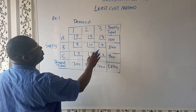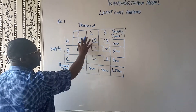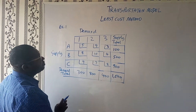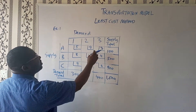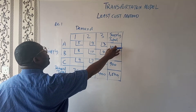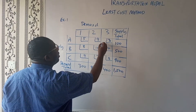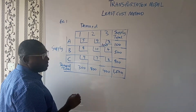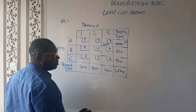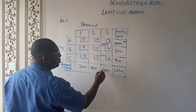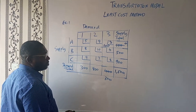From the unit costs, which is the least cost here? We have 3 — 3 is the least cost. Since 3 is the least cost, we're going to portion the supply from A into center 3. So we're going to have 100 here, being the least cost. We will cross out the 100 here and reduce this by 100, so that it becomes 300.